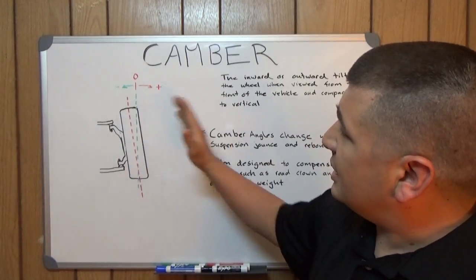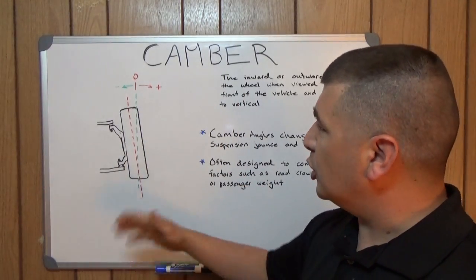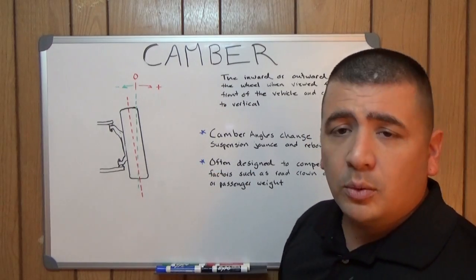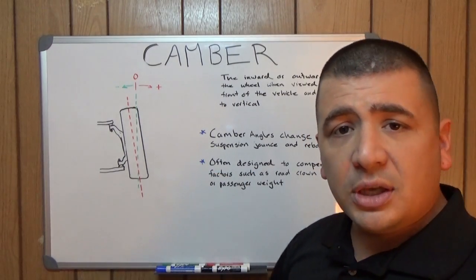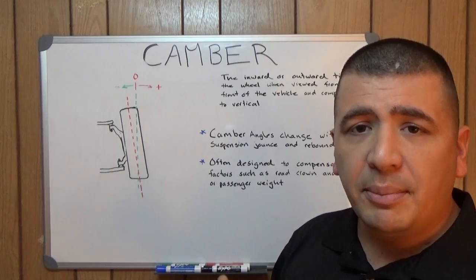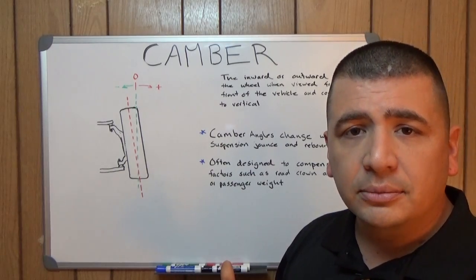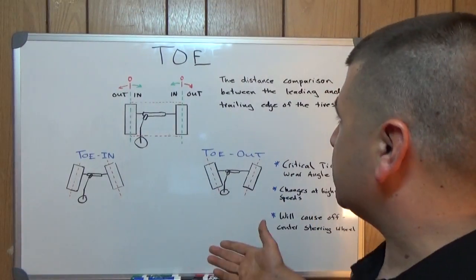The last alignment angle we're going to cover is going to be toe. So we'll get the board switched over to toe and we'll be back in just a second. Okay, we got our board switched over, so let's look at toe.